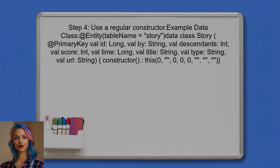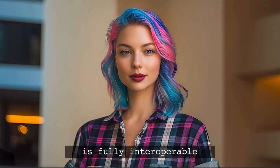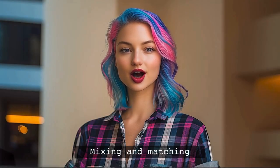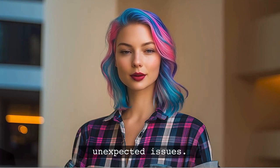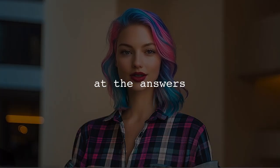Lastly, if the problem persists, consider using a regular constructor instead of the default constructor. This can sometimes help Room recognize the fields correctly. Fun fact: did you know that Kotlin was designed to be fully interoperable with Java? This means you can mix and match, but sometimes it can lead to unexpected issues like this one.